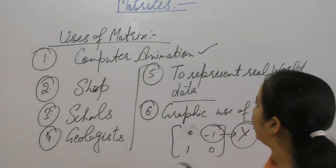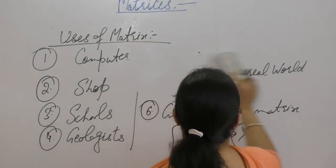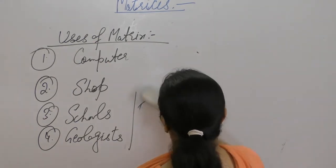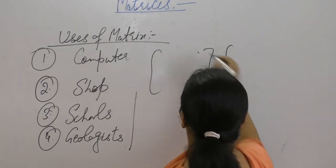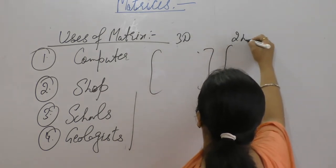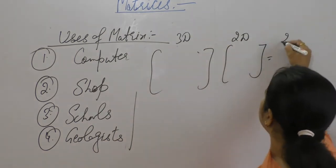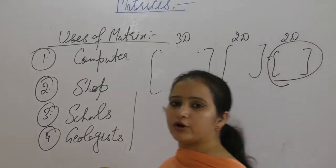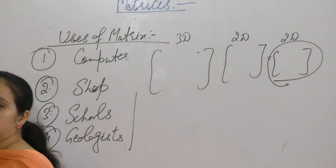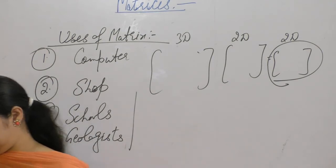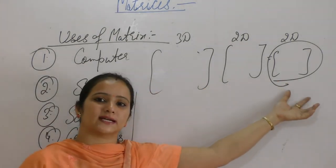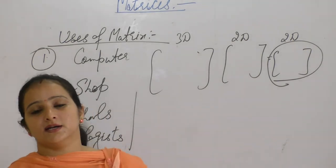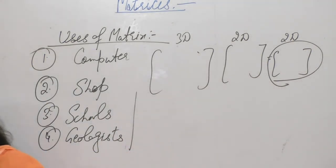Suppose we have any 3D matrix of order 3 into 3 and 2D matrix. And we multiply this matrix and form the matrix of order 2 into 3. Then 3D into 2D ko change karke, 2D me convert kar diya. So matrices are used, these are called graphic use of matrix.